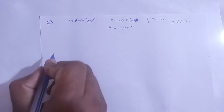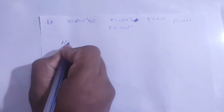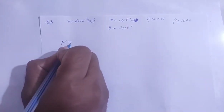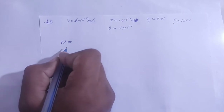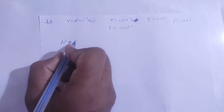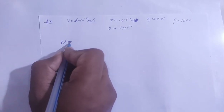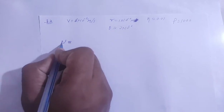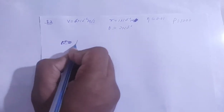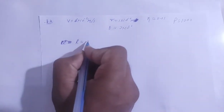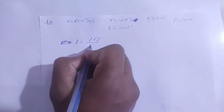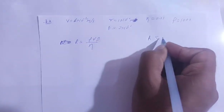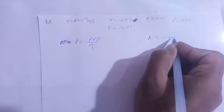Now, what is the Reynolds number? The Reynolds number is the constant that determines the flow — whether it is steady flow or turbulent flow. The formula for the Reynolds number is: R equals rho times v times d divided by eta.